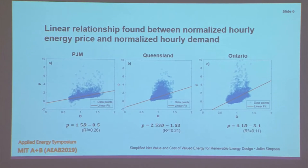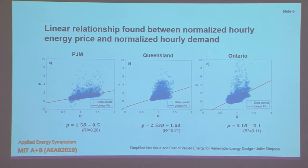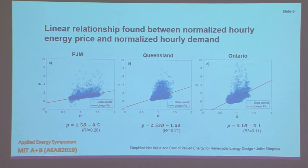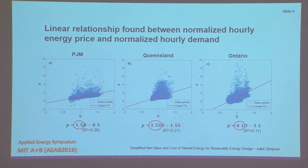Inspired by that paper by Von Roon, we pulled in data from around the world looking at hourly spot market prices and demand. We have three different regions: first is PJM, the mid-Atlantic region in the United States; next is Queensland, Australia; and then Ontario, Canada. For each of these we fit a linear trend line and found, once again, fairly low R-squared values, but we still feel a linear trend is reasonable. We did note that each of these regions has a different slope defining this data, and we were trying to decide what could explain the fact that these slopes are different.